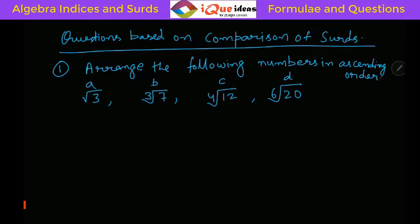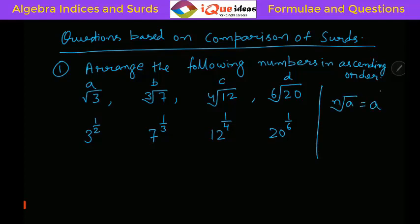First let us write them in terms of powers. Square root of 3 can be written as 3 to the power 1/2. Cube root of 7 can be written as 7 to the power 1/3. Fourth root of 12 can be written as 12 to the power 1/4. And sixth root of 20 can be written as 20 to the power 1/6, since the nth root of A is A raised to the power 1/n. Now look at the powers: 1/2, 1/3, 1/4, and 1/6.